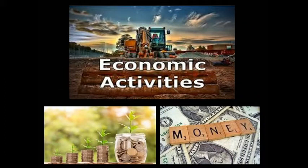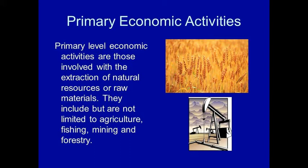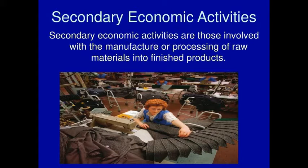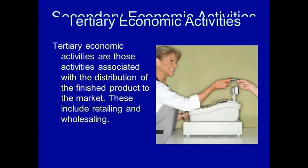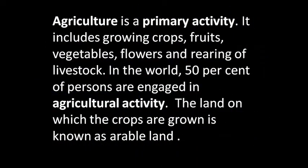Economic activities. There are three types of economic activities: primary economic activities, secondary economic activities, and tertiary economic activities. Primary economic activities are those involved with the extraction of natural resources or raw materials; they include agriculture, fishing, mining and forestry. Secondary economic activities are those involved with the manufacture or processing of raw materials into finished products. Tertiary economic activities are those associated with the distribution of the finished product to the market, and include retailing and wholesaling. So, agriculture is a primary activity.